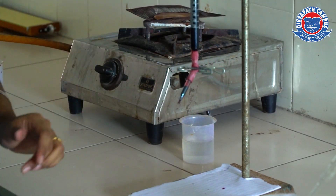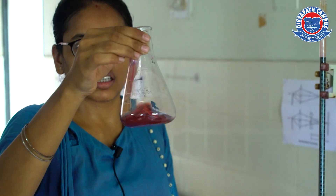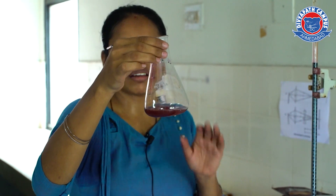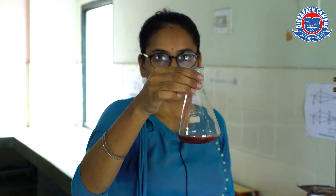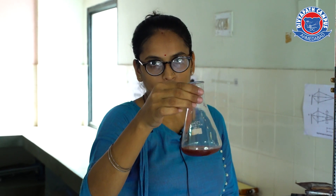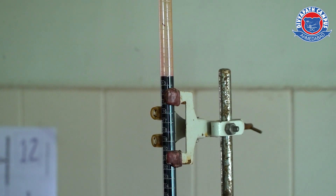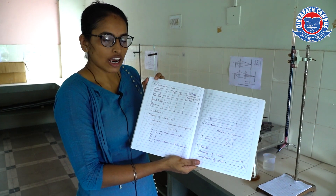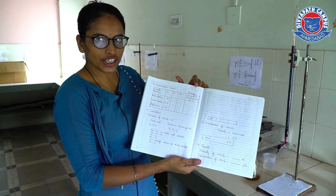Now you can see the color of the solution has changed and it remains persistent — it is not disappearing. So this is our end point. The reading of the burette is near about 12. After titration, after taking 3 consecutive readings, we have to put the values inside the observation table.